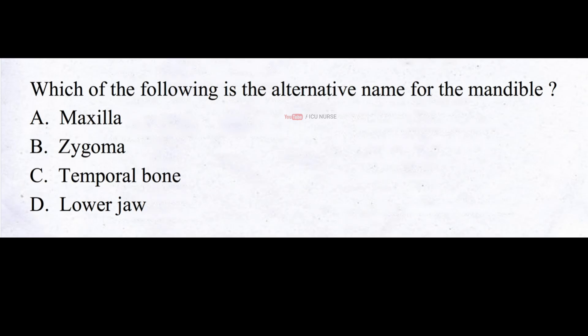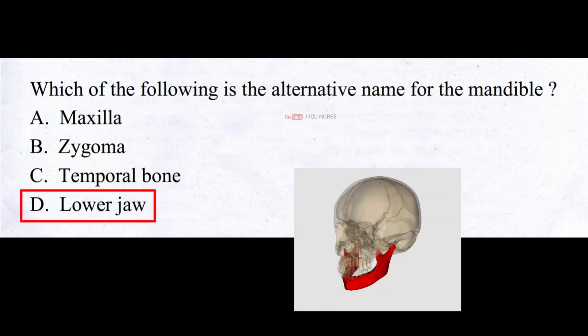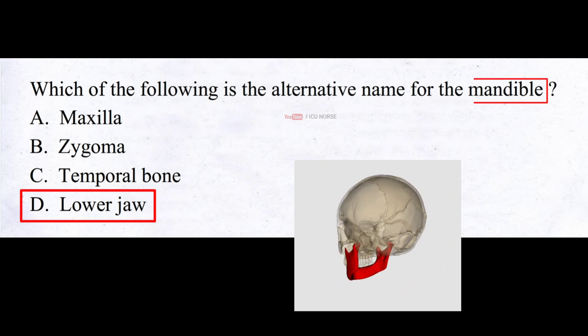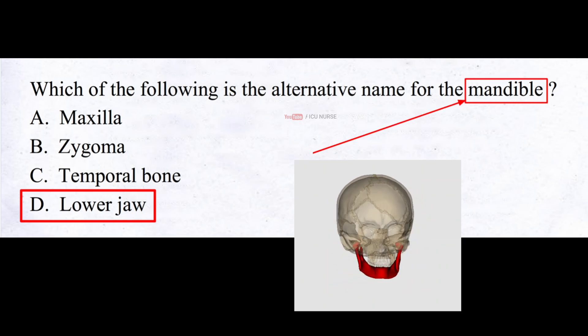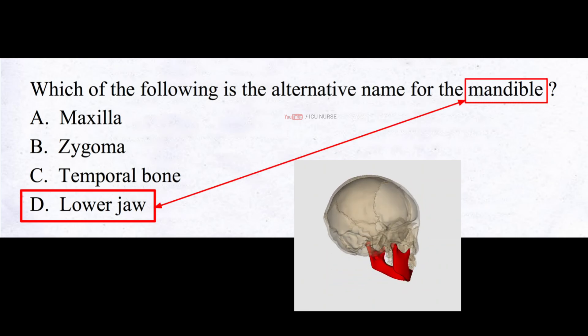Which of the following is the alternative name for the mandible? A. Maxilla, B. Zygoma, C. Temporal bone, D. Lower jaw. And the correct answer is D. Lower jaw. The mandible is also known as the lower jaw.